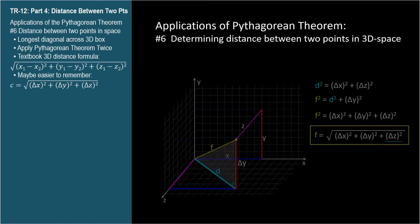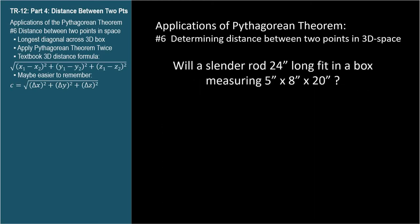Let's work out an example problem. Will a slender rod, 24 inches long, fit in a box measuring 5 inches by 8 inches by 20 inches? This is equivalent to asking if the diagonal of the box is greater than or equal to 24 inches. If so, then the rod will fit.